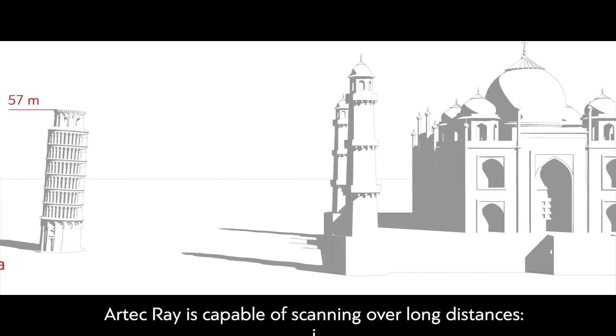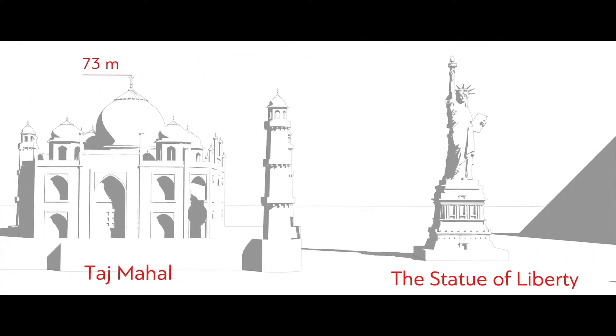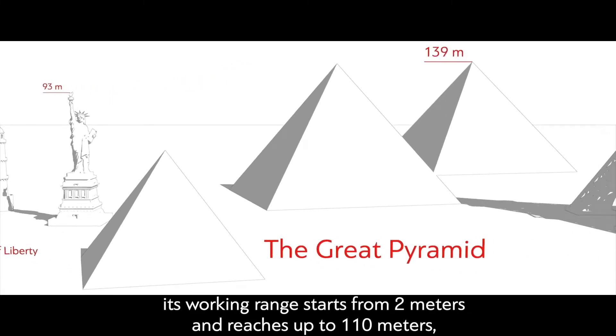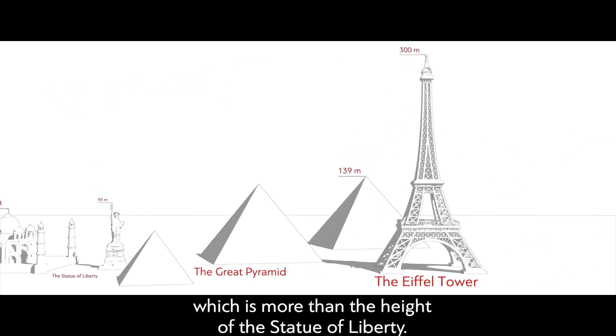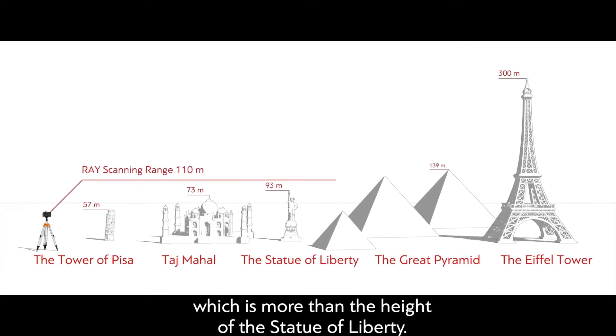Artecray is capable of scanning over long distances. Its working range starts from 2 meters and reaches up to 110 meters, which is more than the height of the Statue of Liberty.